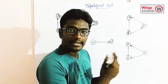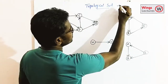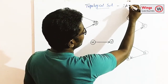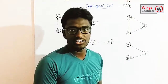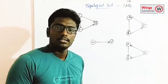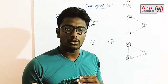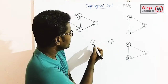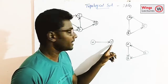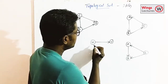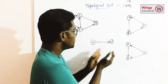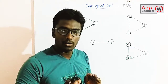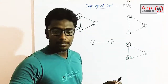Topological sort has to be done only if the graph satisfies the directed acyclic graph condition. Now, what topological sort states is: if we take two vertices, U and V, where U is one process and V is another process, the condition is U has to be done before V. After completing U only, I can go to process V. That is the sequential order.